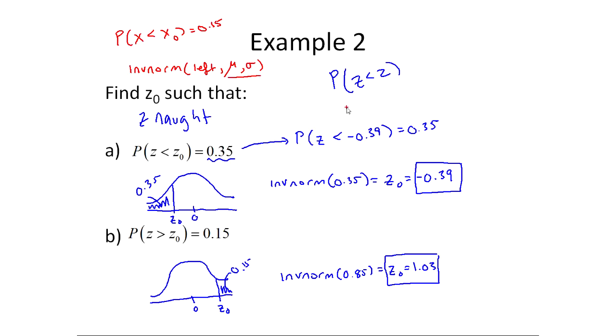So later, when you do applied problems, it'll be inverse normal of the area to the left, but then your mean and then your standard deviation as well. When you don't put in a mean and standard deviation, it assumes you're dealing with z. So remember, if you're dealing with anything other than z to add that in. Otherwise, pay attention, if you're given a probability, area, or percentage, and you're trying to find a value, that's when you use inverse normal.